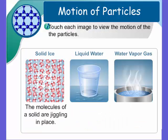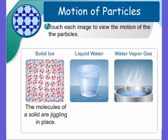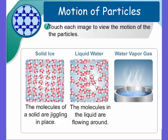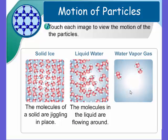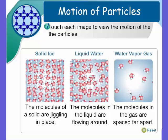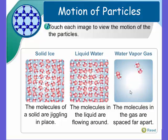Here we can see what solid ice looks like. Notice the molecules are in the solid form, but they still jiggle in place. Liquid water, more movement, they're flowing around each other. Water vapor, the molecules are constantly in motion and they're spaced very far apart.